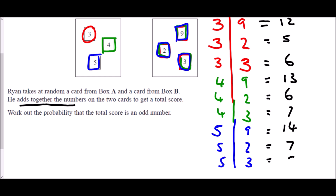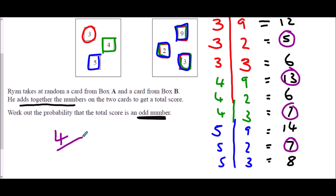The question asks for the probability that the total is an odd number. The odd totals are 5, 13, 7, and 7 — so there are four odd outcomes. There are 9 different combinations in total, so the probability is 4/9.